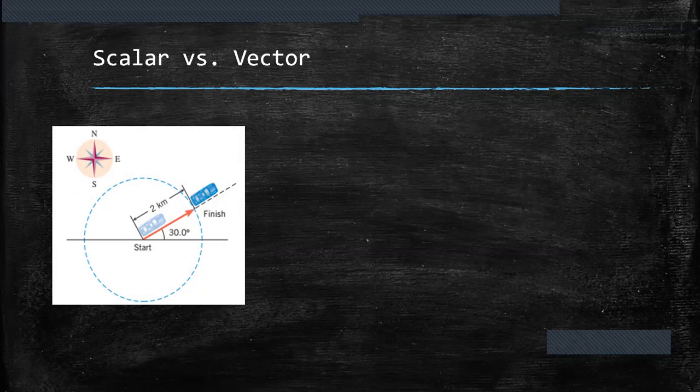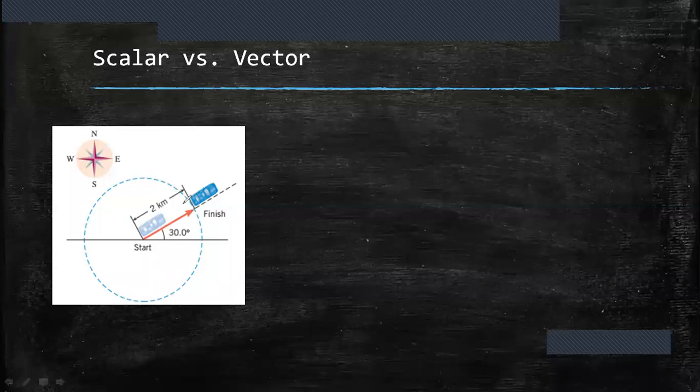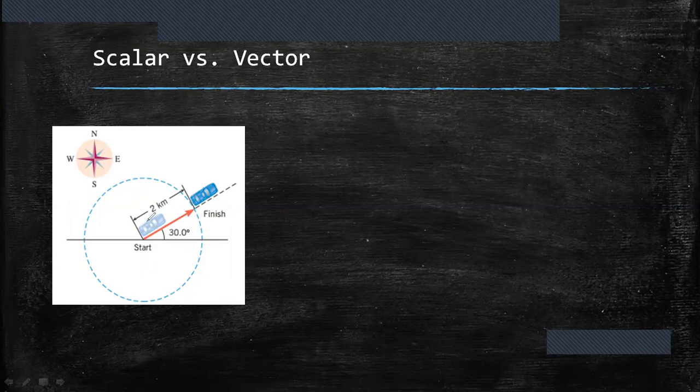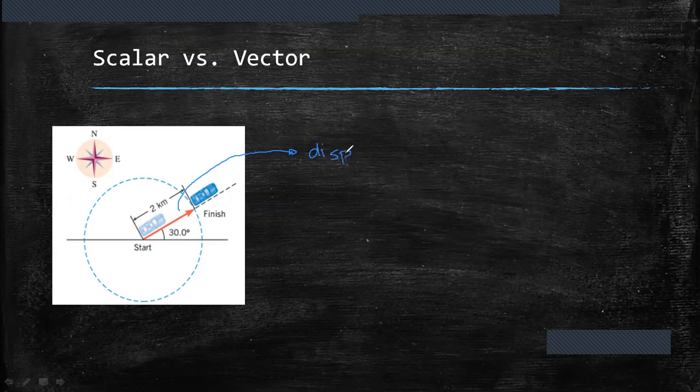the colored arrow is called a displacement vector. Because it shows how the car displaces from its starting point.